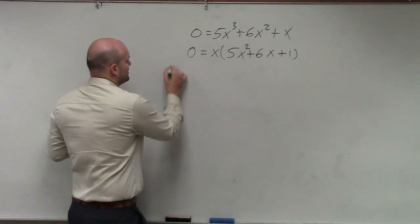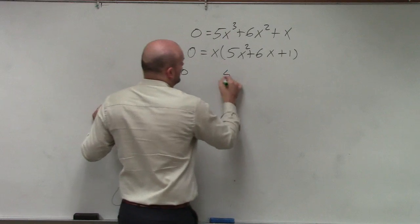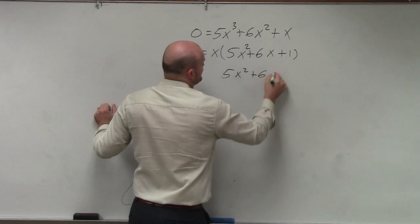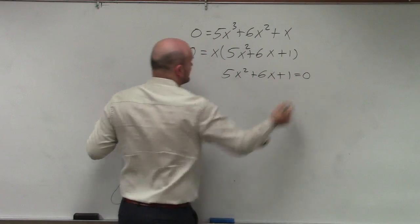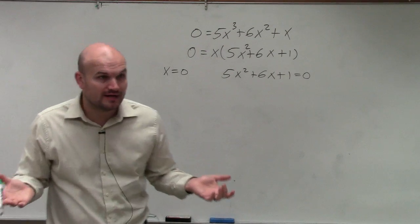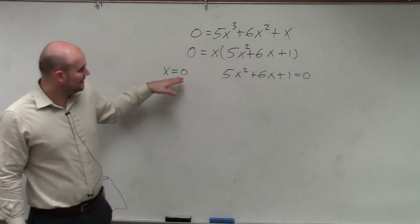So therefore, I can apply the 0 product property. So x equals 0 and 5x squared plus 6x plus 1 equals 0. Well, again, I still need to solve, right? So you could say, all right, well, hey, this works.